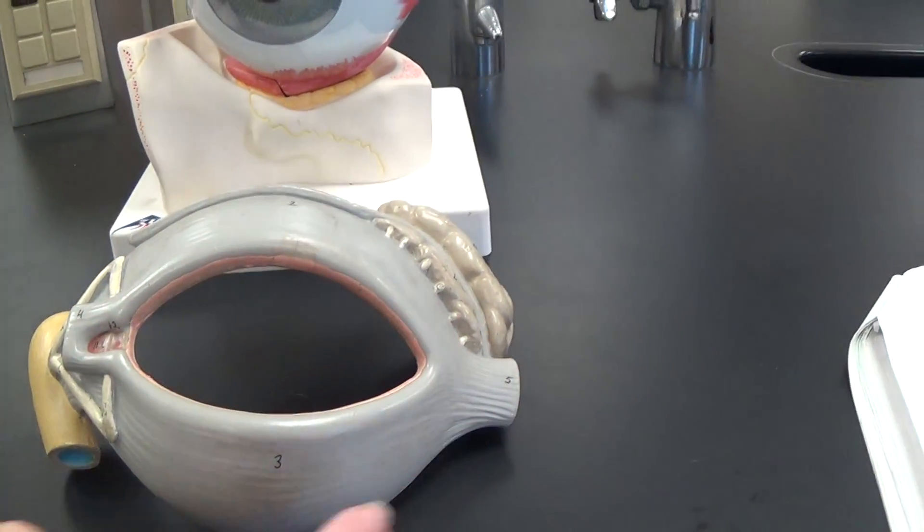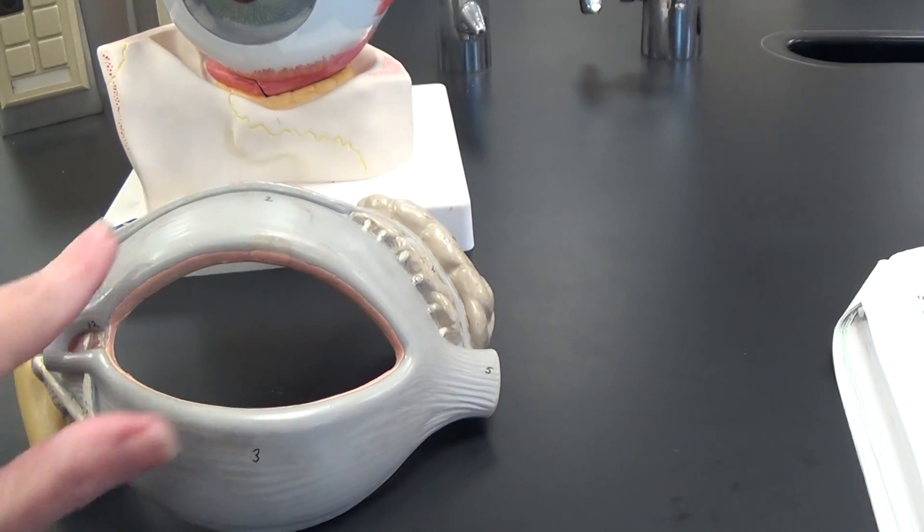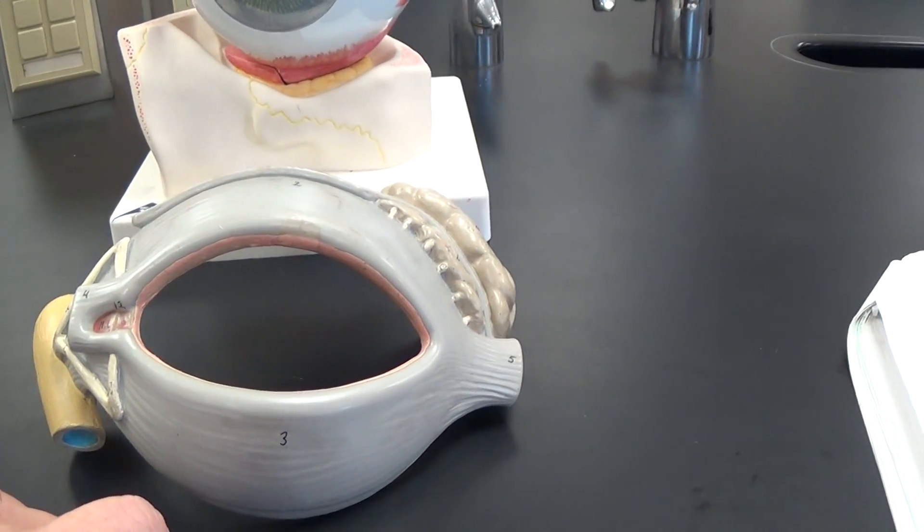The muscle around the eye is the orbicularis oculi, which we also covered in our chapter on muscles.